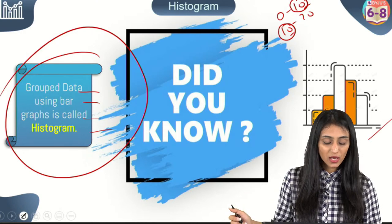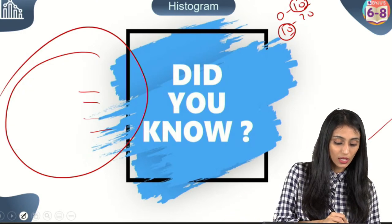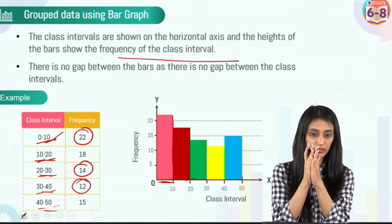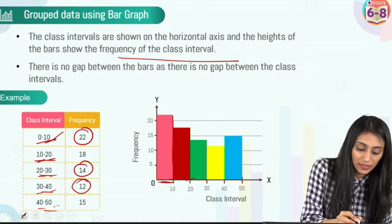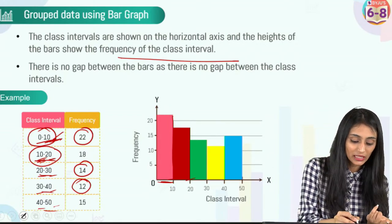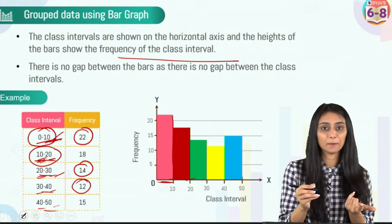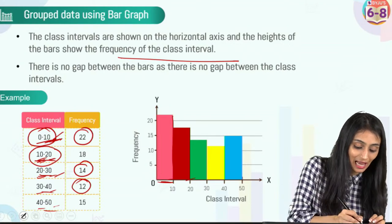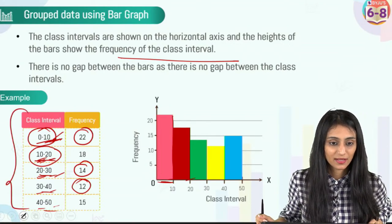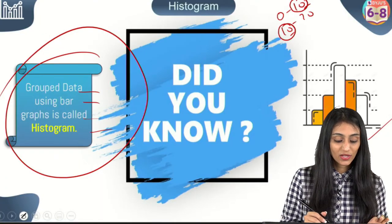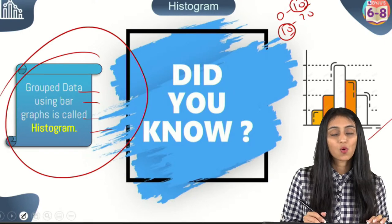In the histogram, all bars are connected and adjacent to each other. Looking at the class intervals — 0 to 10, 10 to 20, 20 to 30 — the numbers are continuous with no gap, that's how we group the data. When we group data using bar graphs, that is called a histogram.